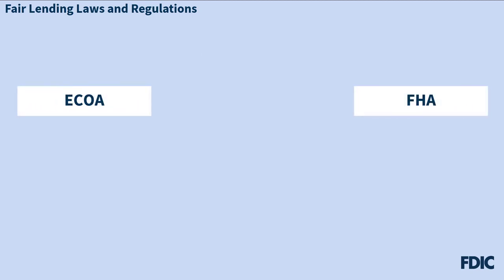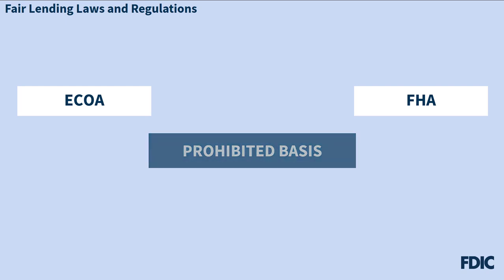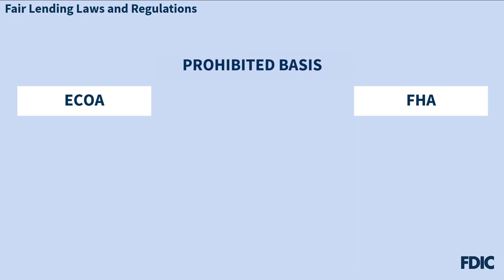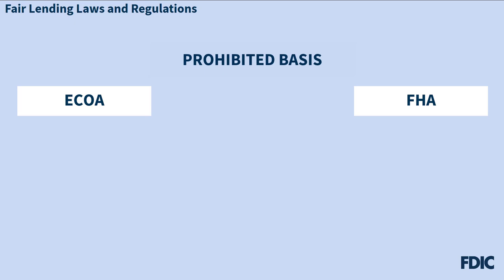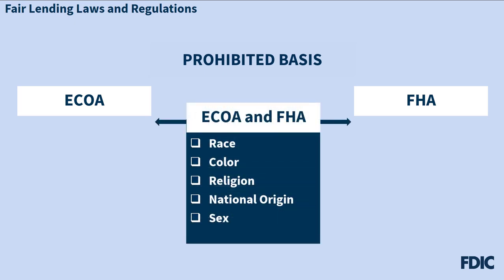Both ECOA and the FHA make it illegal to discriminate based on certain characteristics of the applicant or borrower. Such a characteristic is referred to as a prohibited basis. While ECOA and the FHA each cover some of the same prohibited basis groups, there are some that are exclusive to each law. Both ECOA and the FHA prohibit discrimination based on race, color, religion, national origin, and sex.